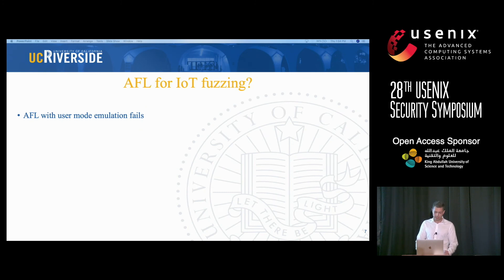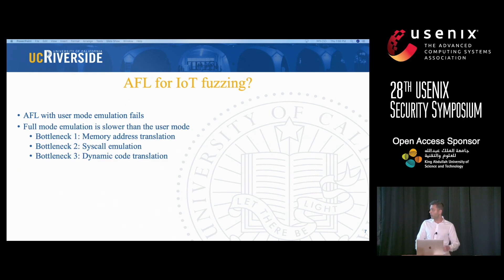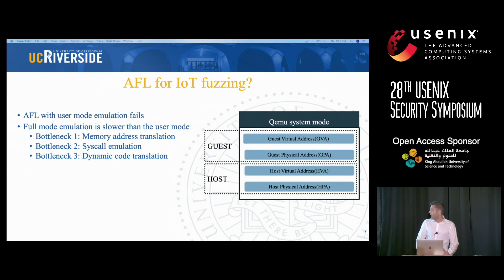So how about replacing AFL's user mode emulation with full system emulation? Well, that's slower — it has a low throughput. There are three reasons for that. First, the memory address translation in full system emulation is more complicated; there are actually three layers of code translation, and each layer adds extra overhead. Second, we have system call emulation to resolve hardware dependencies, which adds overhead. Third, dynamic code translation takes more time in system mode emulation. If you're interested, please go to the paper and read it.